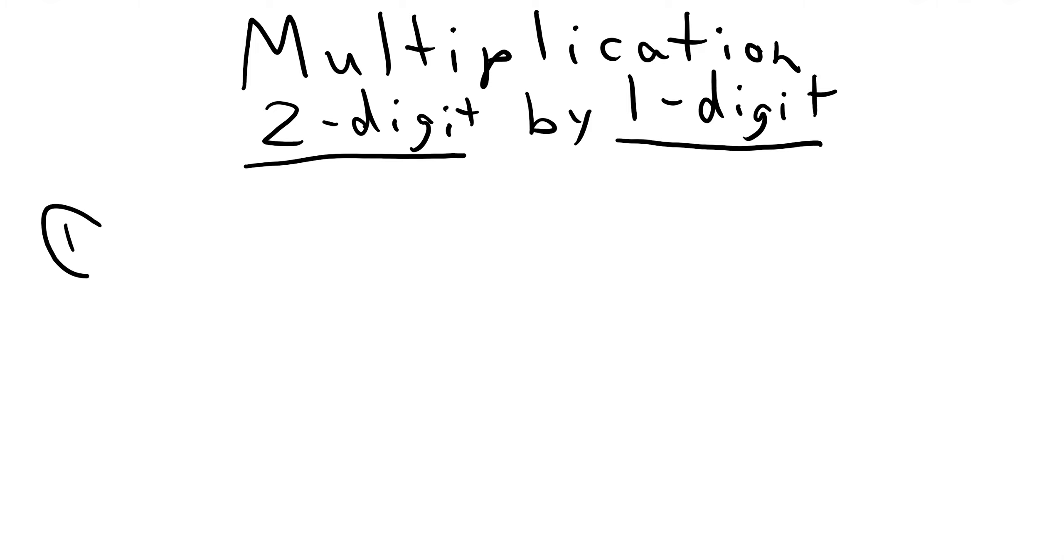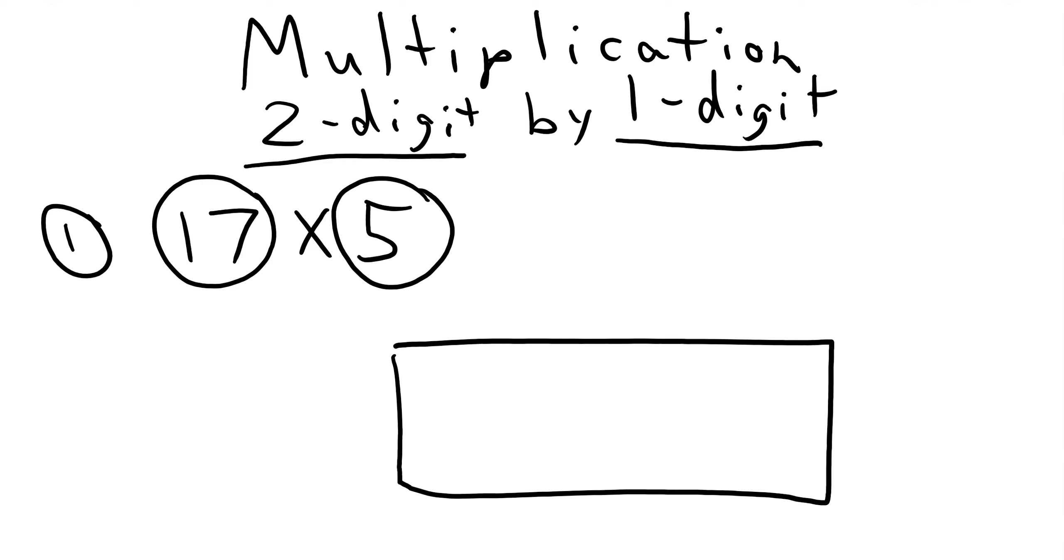Our first example will be 17 times 5. Our first step is to look at the numbers, and we notice that we have a two-digit number here and a one-digit number here. This means that when we make a generic rectangle, here's our generic rectangle, we're going to split it into two parts so that it has two boxes going this way, two columns, and one row.